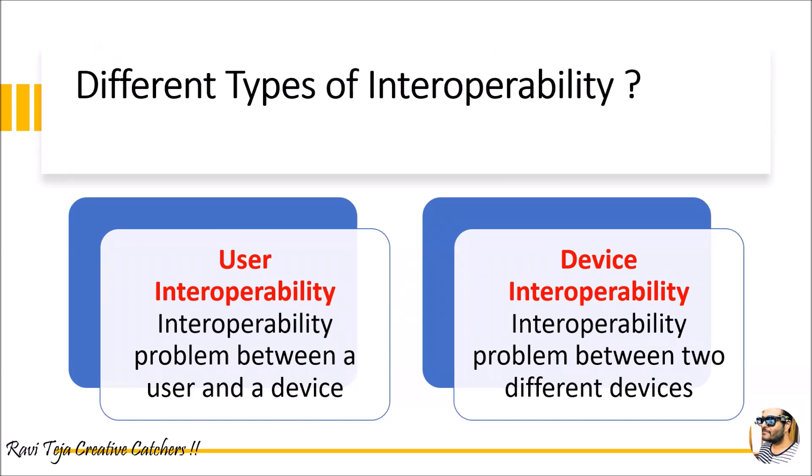Coming to user interoperability, it addresses the interoperability problem between a user and a device. Whenever a person tries to use or communicate with an IoT device, user interoperability is considered. Coming to device interoperability, the problem arises between two different devices. Whenever two different devices want to communicate with each other to satisfy an IoT application, several problems arise, and device interoperability is used to address those. Let's now see user interoperability and device interoperability one by one.